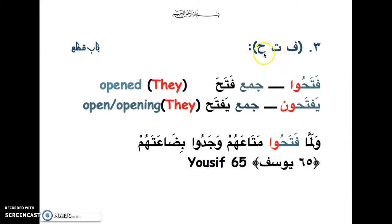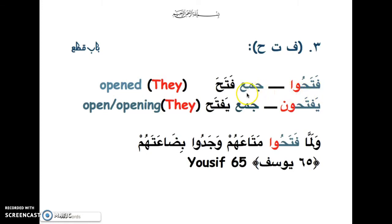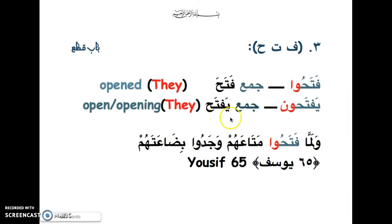The third example is 'fataha', from bab qatala — 'fataha yaftaha'. I tried to mix up the verb patterns. 'Fatahu' is the plural form of 'fataha', meaning 'they opened'. 'Yaftahoon' is the plural form of 'yaftaha', meaning 'they are opening' or 'they open' continuously, since this is a mudare — present tense.